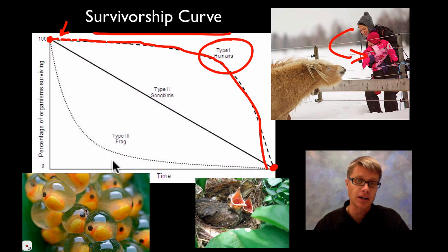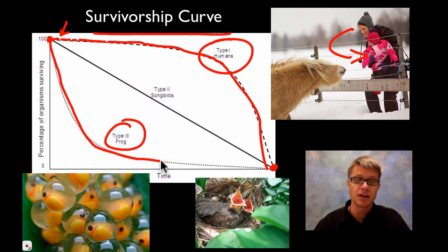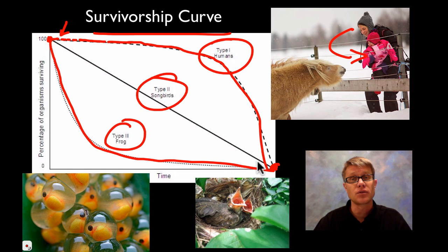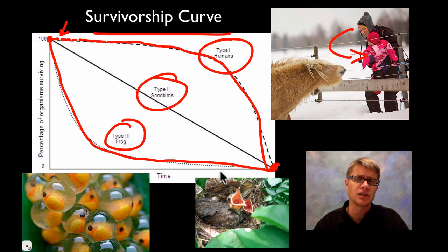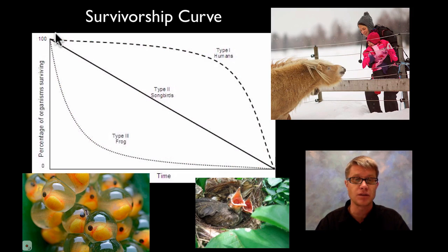If we look at a frog, they show a Type 3 survivorship curve. On day one, thousands of little frogs hatch and almost all of them die, but a few survive, level off, and eventually all die. We also have something in the middle — Type 2. Songbirds are an example: they die off at a linear rate throughout their whole life cycle. Robins on average live about a year, but some live a few months and some live three years — the cohort just drops off at a steady rate until they're all gone.